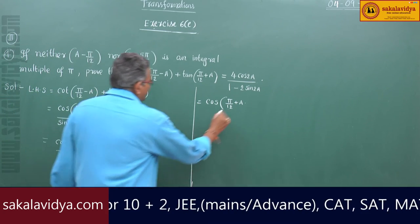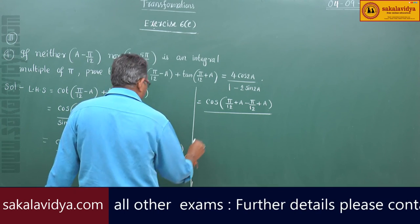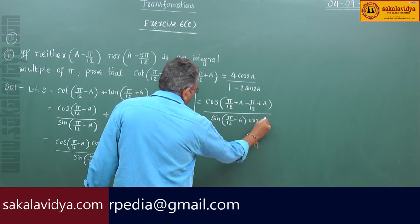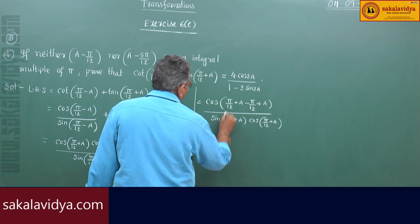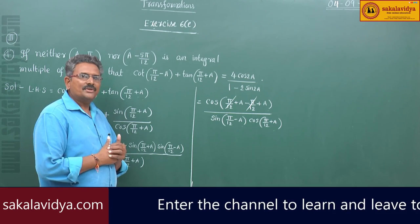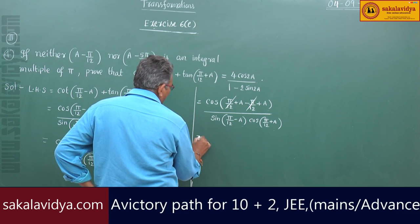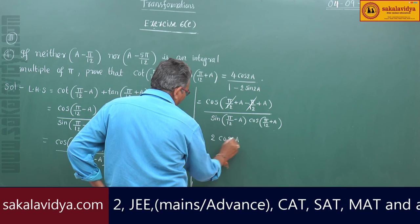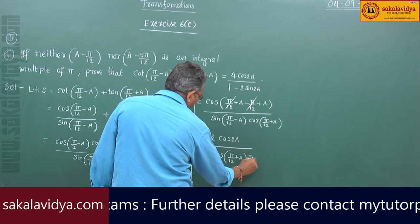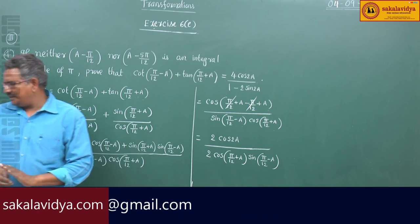So, minus pi by 12 plus a. This is sin(pi/12 minus a) and next cos(pi/12 plus a); pi by 12 gets cancelled. Observe the denominator — it is a product of two terms. We need to change it into a sum because it has to be expressed as 1 minus 2 sin 2a. Multiply by 2 and divide by 2 to get 2 cos((pi/12) + a). This can be written as 2 cos A sin B.